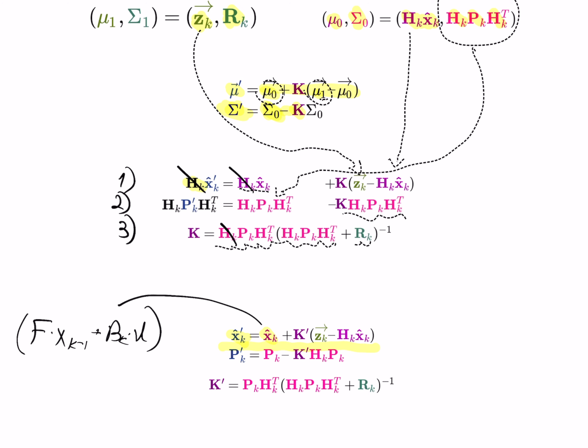For the uncertainty P matrix, I divide everything by hk and hk transpose on both sides, removing those terms. The new uncertainty becomes: Pk minus k times hk times Pk. And the new Kalman gain k is: Pk times hk transpose, times (hk times Pk times hk transpose plus rk) to the minus one. So we just finished explaining all the complex Kalman filter equations.